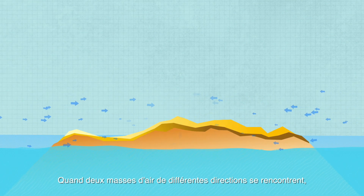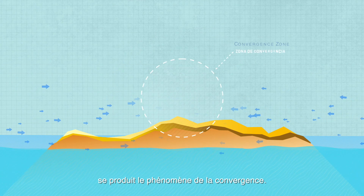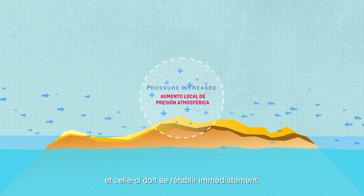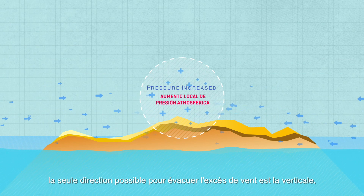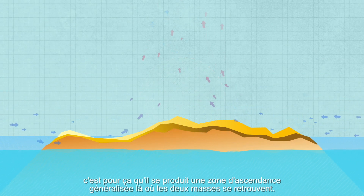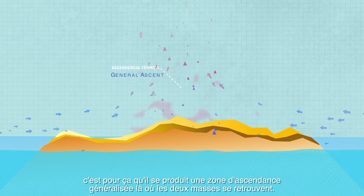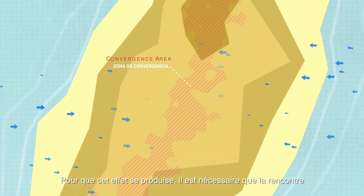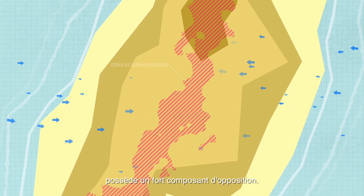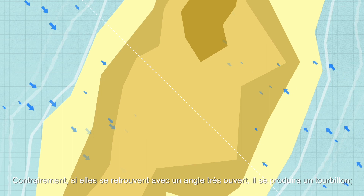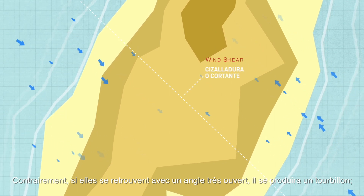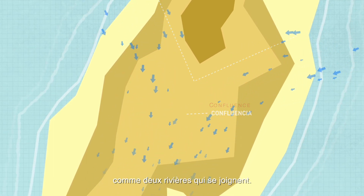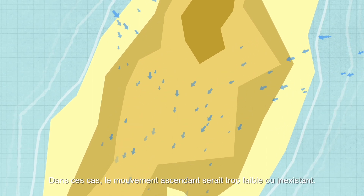When two air masses coming from opposite directions meet, convergence takes place. This phenomenon produces a local increase in atmospheric pressure which must be re-established at once, and the only way for the excess wind to go is upwards, so there is a general ascent at the meeting point of both air masses. This effect is produced when the opposite air masses bear significantly opposite wind directions. Otherwise, if they meet at a very open angle, a wind shear will be originated; and if they meet at a very closed angle, confluence will start like two adjoining rivers. In all these cases the rising movement will be weak or even absent.